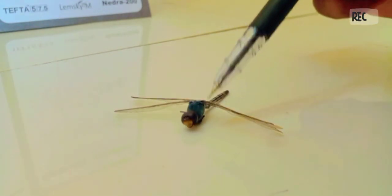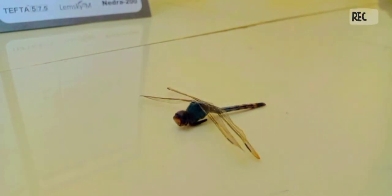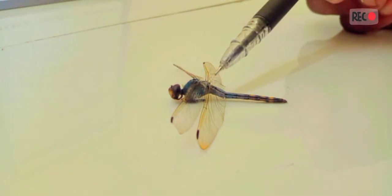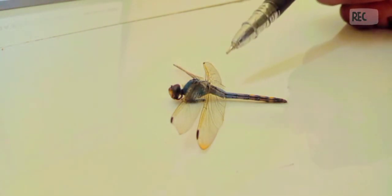Now the abdomen part. The abdomen starts from here to here. It is long and cylindrical and consists of ten segments. Here are the segments.